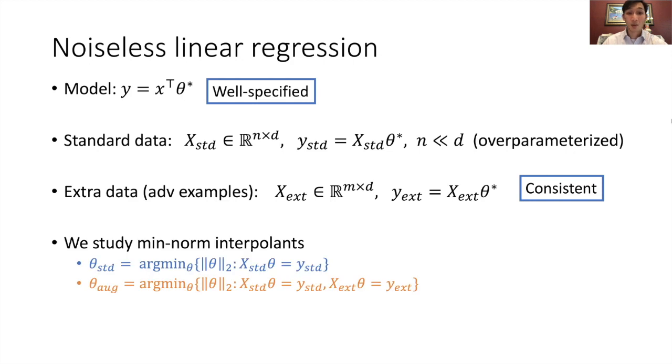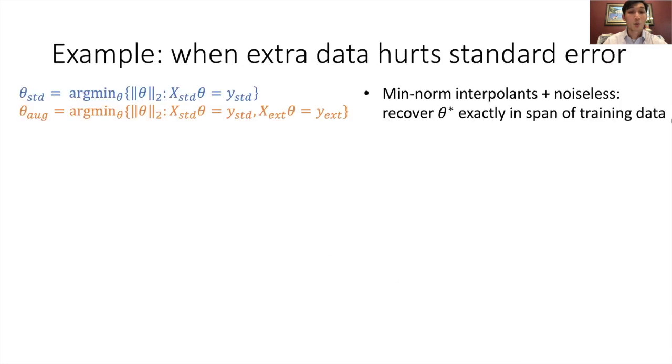We study minimum norm interpolants. The standard estimator, which is in blue, is the minimum L2 norm solution that fits the standard data. The augmented estimator, which is in orange, additionally has to fit the extra data. Notice that the constraints only constrain the estimators on the span of their respective training data. And the min norm objective is an inductive bias that chooses a solution from among the feasible set. The standard error is the parameter error, which is the difference between the estimated parameters theta and the true parameters theta star, scaled by the population covariance sigma.